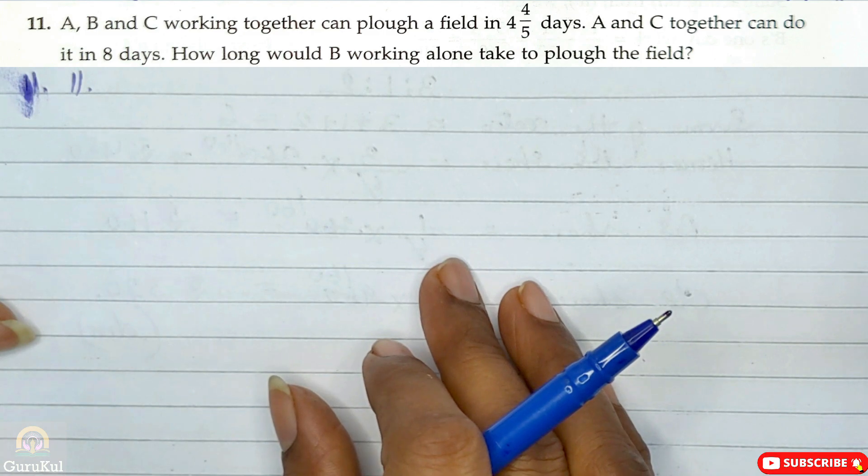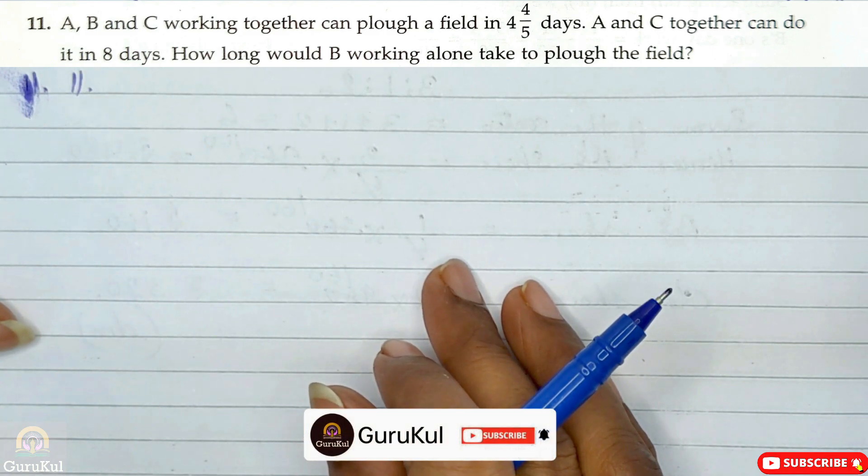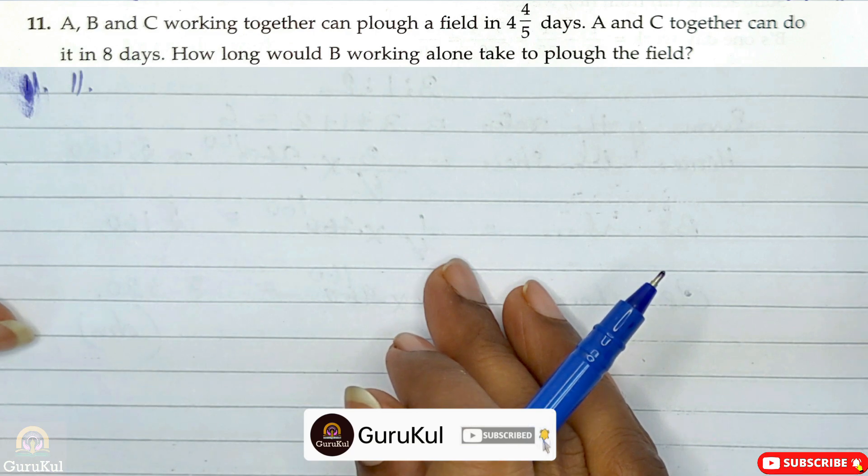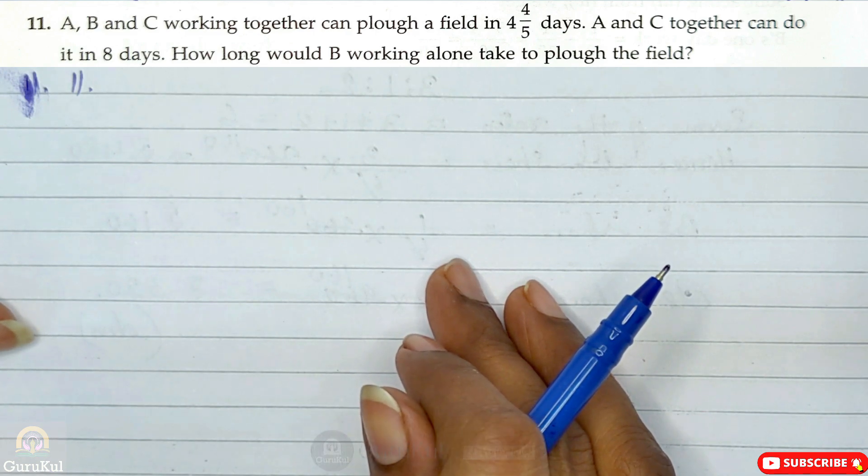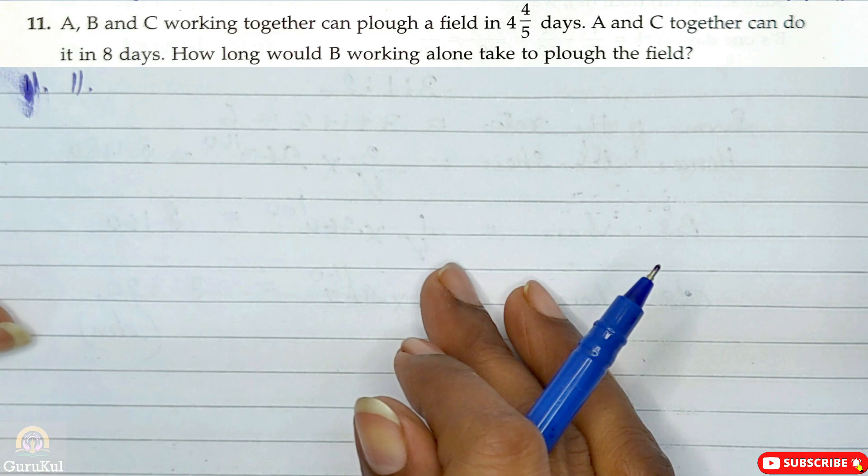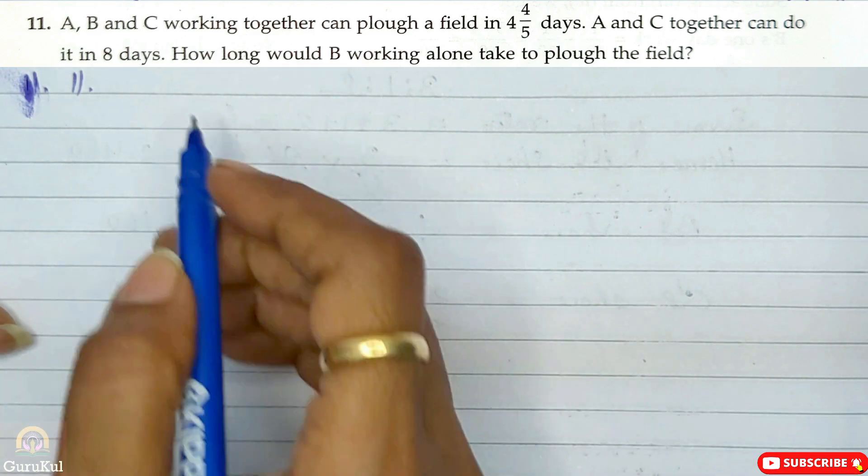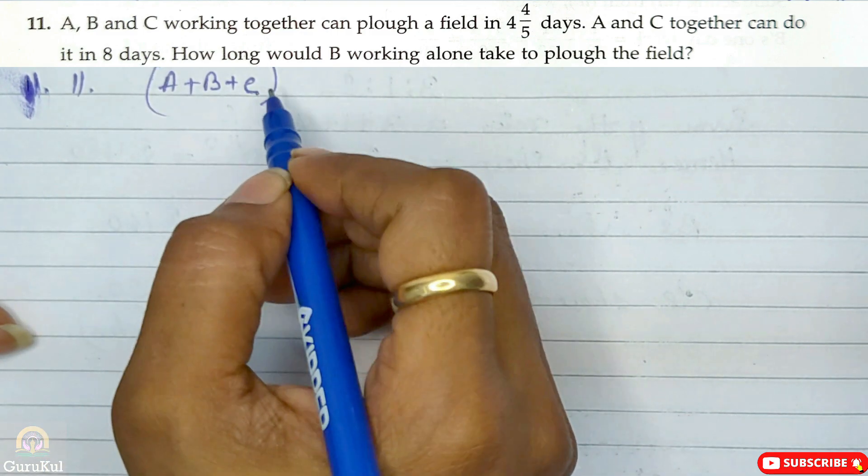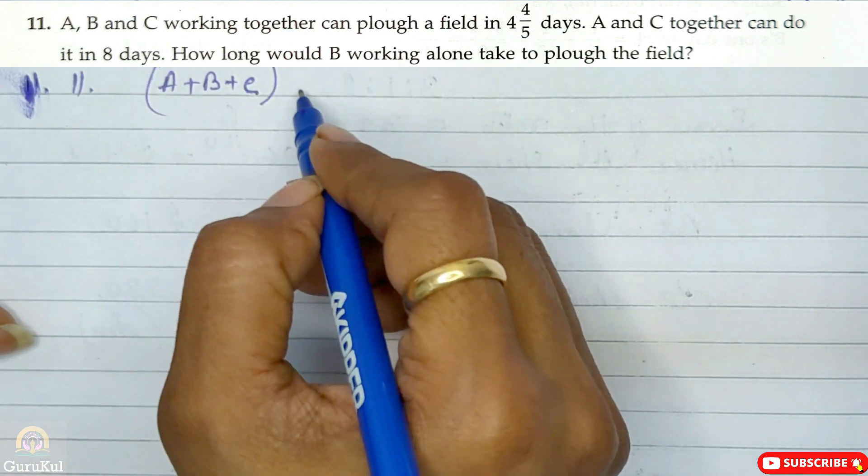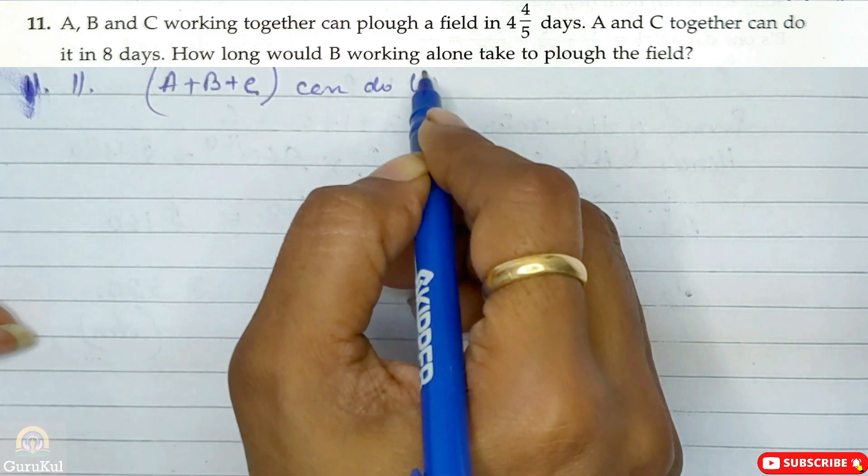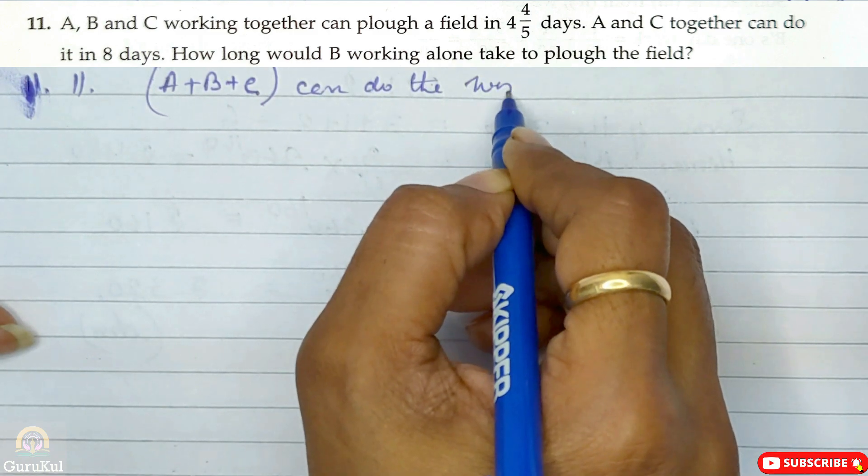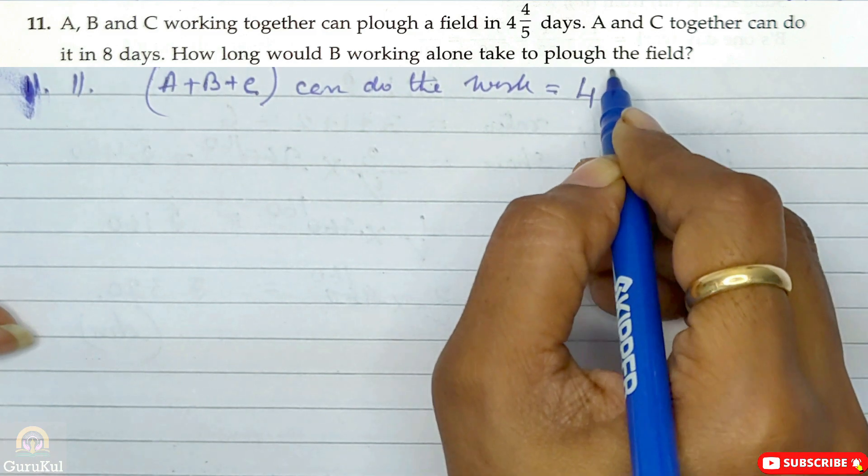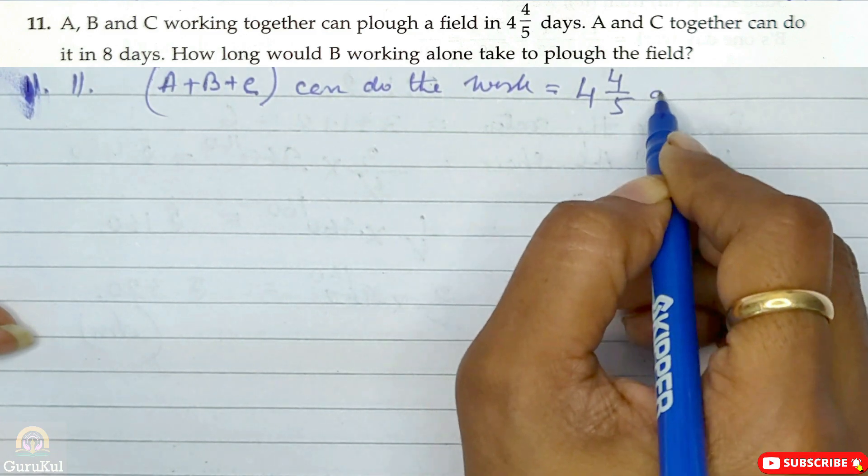Now question number 11. A, B and C working together can plow a field in 4 by 5 days. And A and C together can do it in 8 days. So how long will B working alone take to plow the field? So this is the first one day work, so here is A plus B plus C.